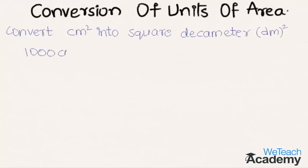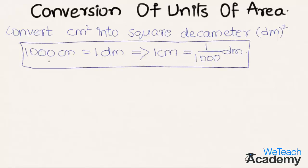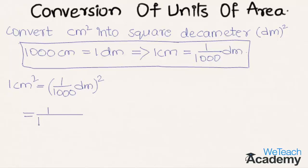Here, one thousand centimeters is equal to one decameter. That implies one centimeter will be equal to one by thousand decameters. Now, in order to convert centimeter square into square decameters, let us square this. So we get one centimeter square is equal to one by thousand decameters, whole square. That implies one centimeter square is equal to one by one million decameters square.